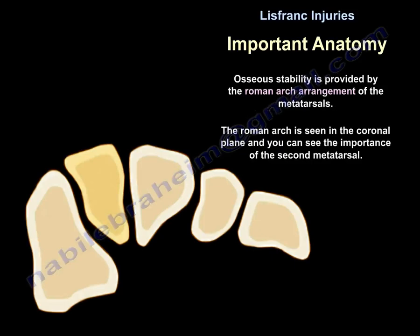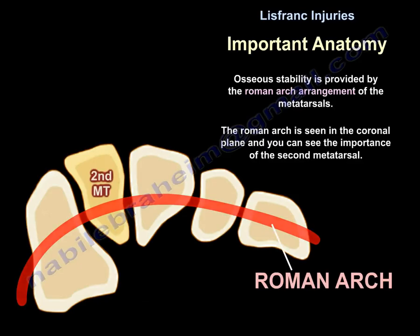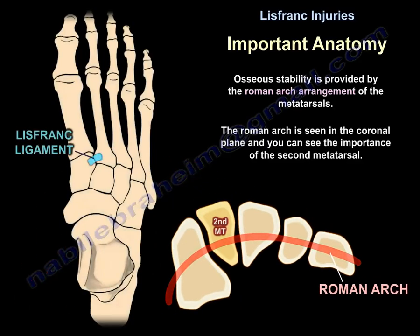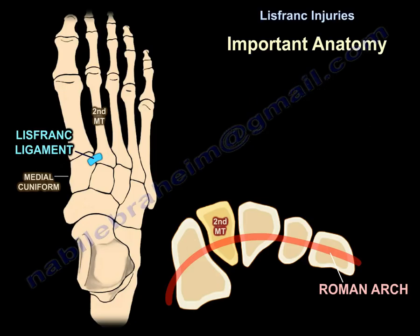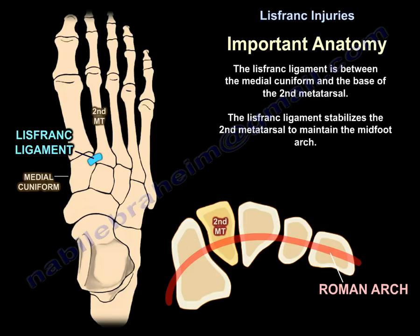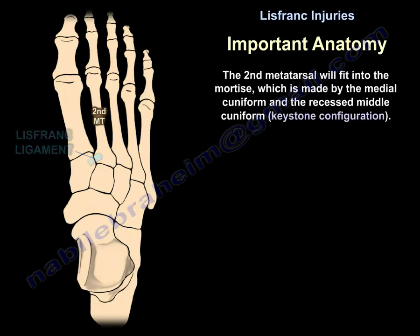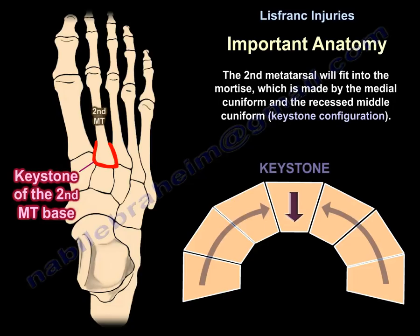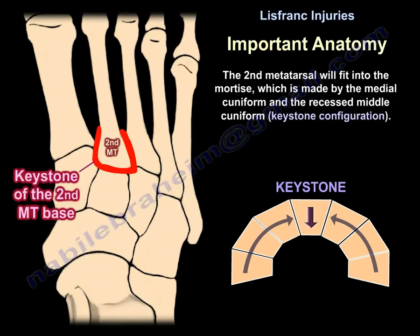Osseous stability is provided by the Roman arch arrangement of the metatarsals. The Roman arch is seen in the coronal plane, highlighting the importance of the second metatarsal. The Lisfranc ligament between the medial cuneiform and the base of the second metatarsal stabilizes the second metatarsal to maintain the midfoot arch. The second metatarsal fits in a mortise made by the recessed medial cuneiform — a keystone configuration.